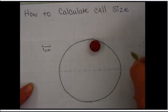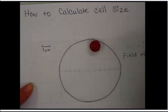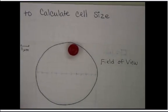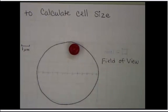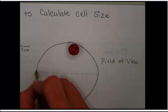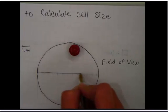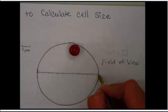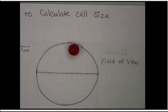So field of view is sometimes referred to as the diameter. So we need to figure out from one end all the way across our circle to the next end as our field of view.